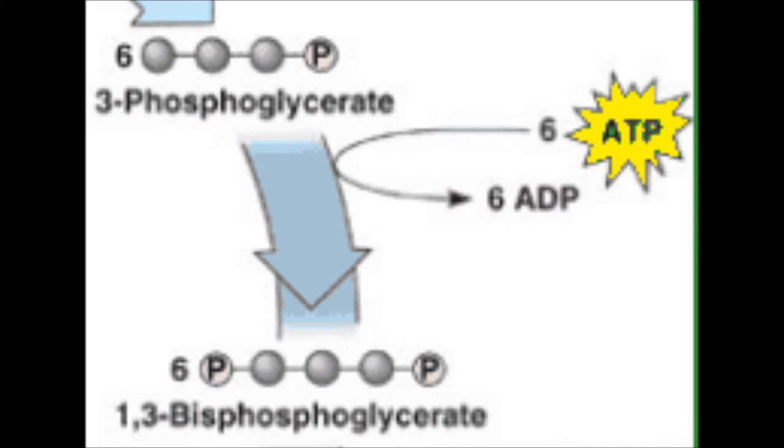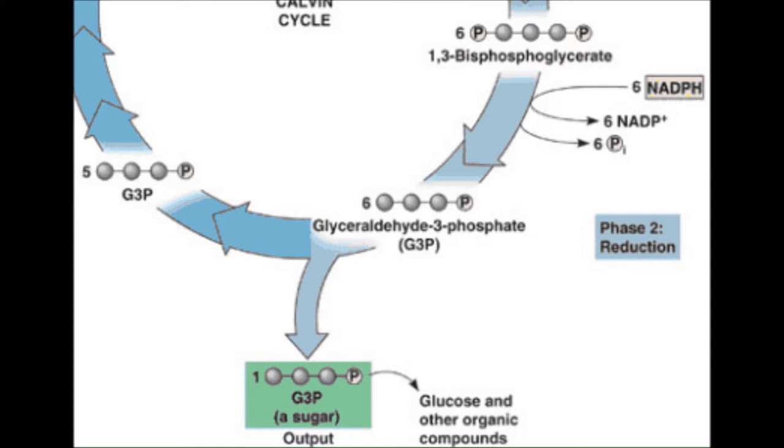Each PGA gets a phosphate from ATP reducing the ATP to ADP. We now have 6 biphosphoglycerates. Now, NADPH comes and takes a phosphate from each biphosphoglycerate. We now have 6 glyceraldehyde-3-phosphates, also known as G3P and PGAL.